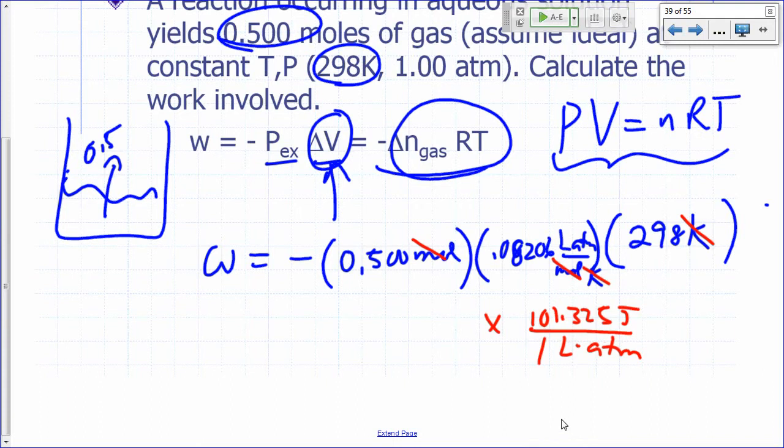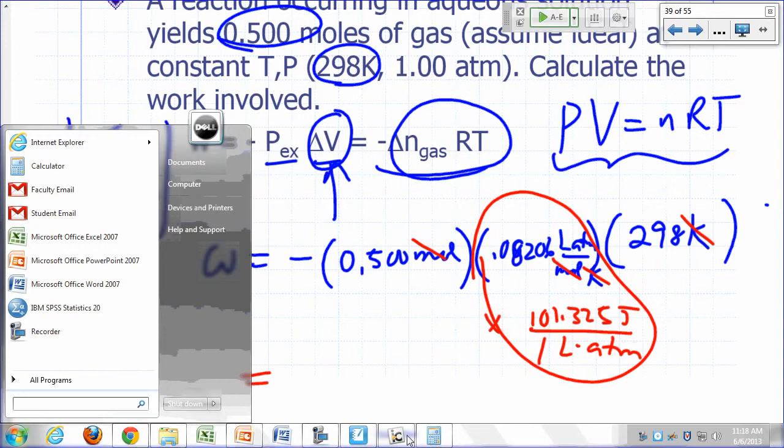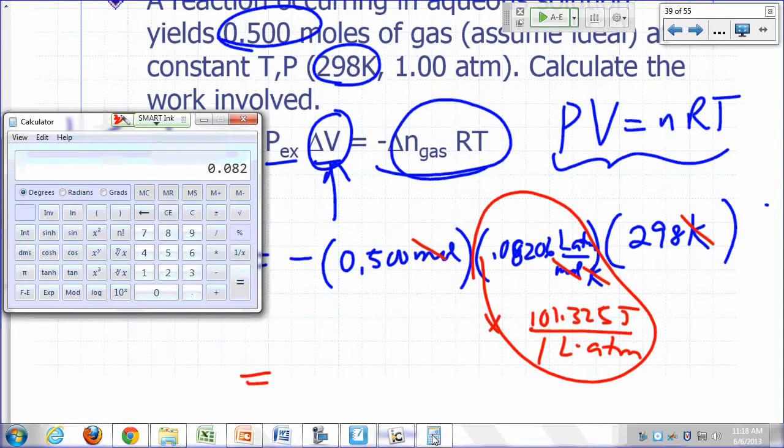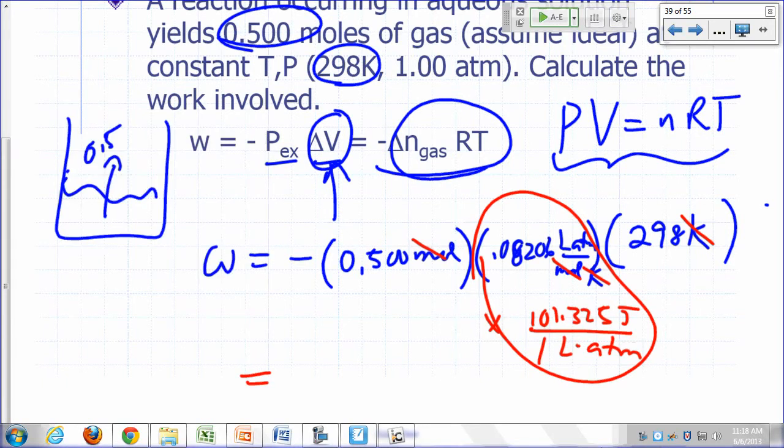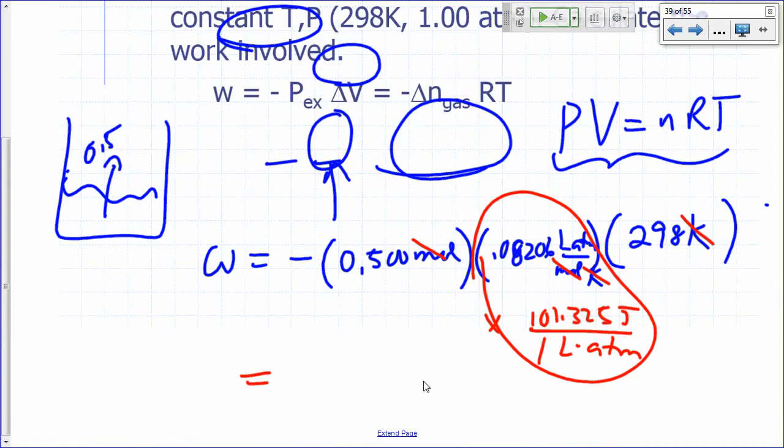So you can change your R in joules. Look at this, 0.08206 times 101.325, that's 8.314.